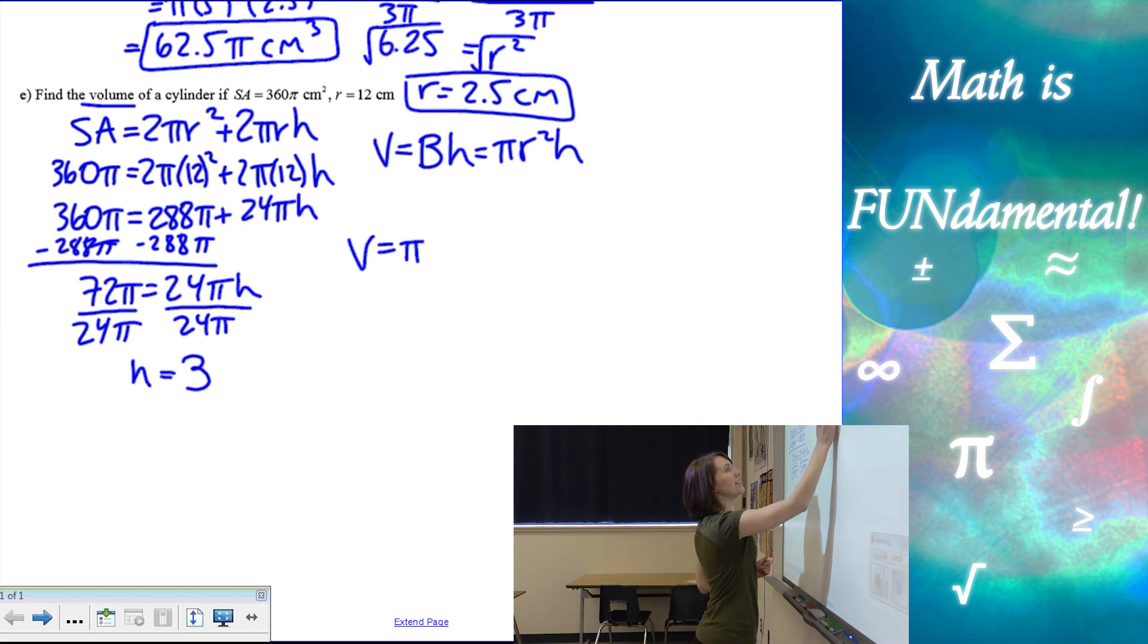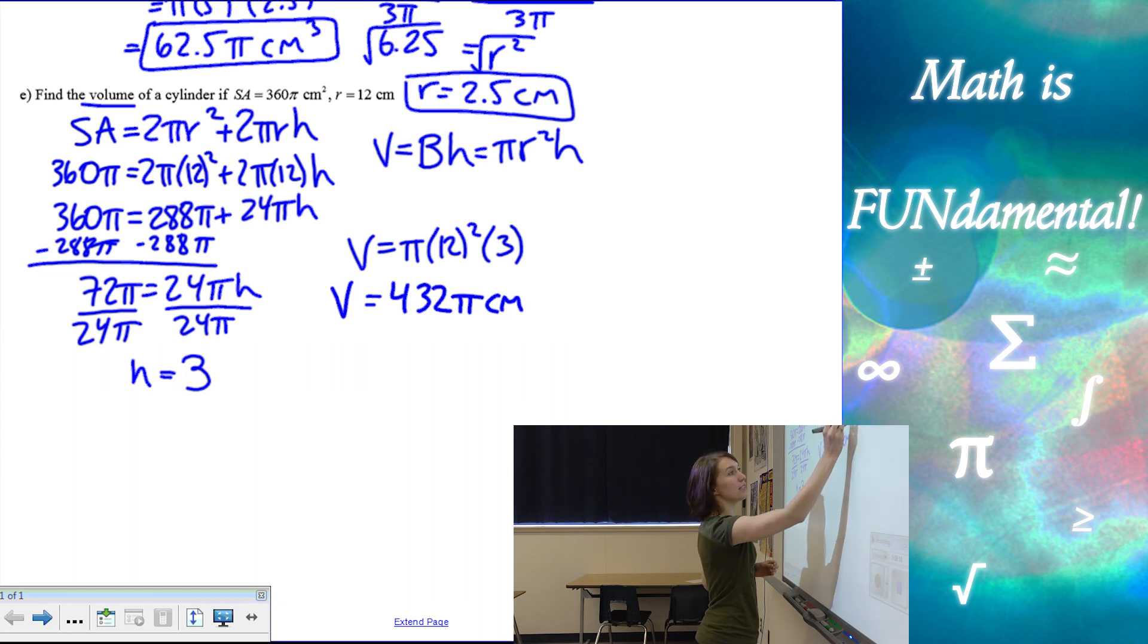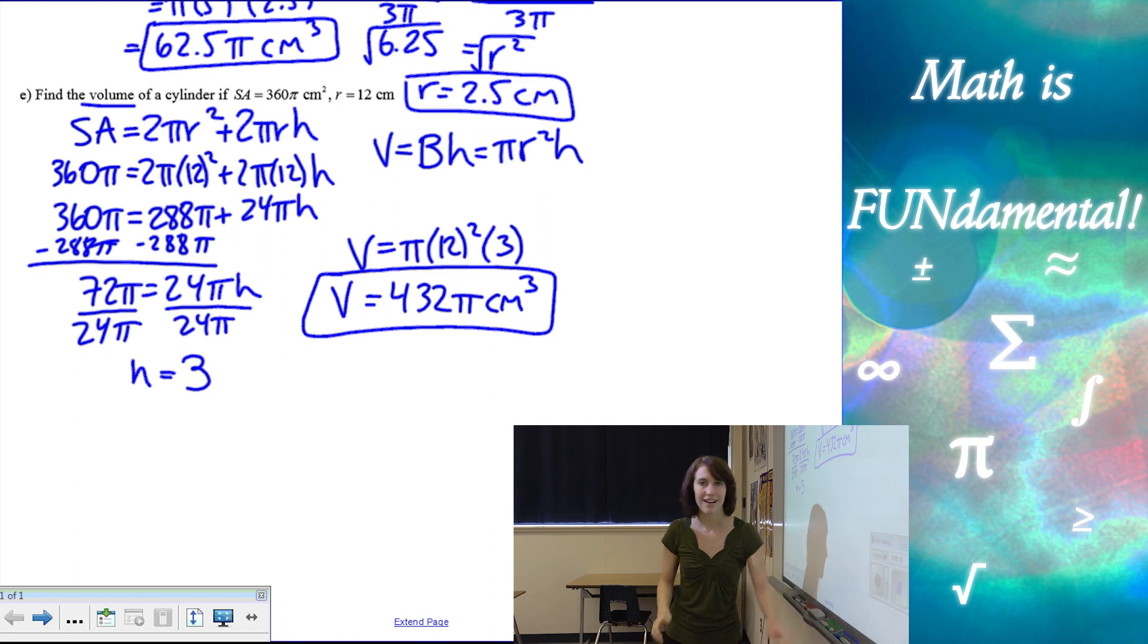Now my volume is pi times r squared times 3, my height, which is 144 times 3, which is 432 pi. And my units were centimeters and it's volume. So we cube it.